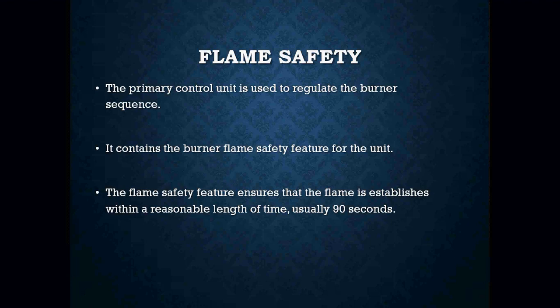The primary control on an oil burner is for flame safety — it regulates the burner sequence. The primary control tells the burner there's a call for heat, and also tells the burner and furnace whether or not it actually lit off and that there is fire in the combustion chamber. With the flame safety features, it ensures the flame is established within a reasonable length of time. With stack relays, that was usually around 90 seconds, which is a long period of time.